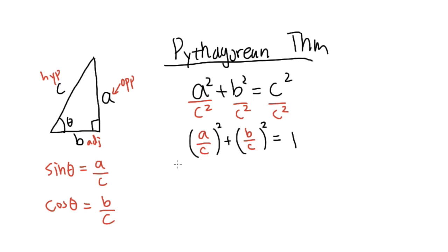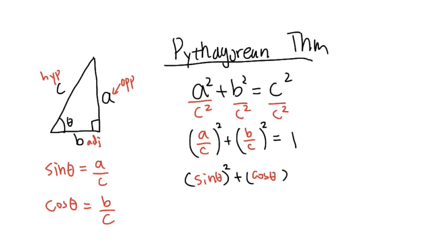Now, a over c as we talked about is just sine theta, so (a/c) squared becomes (sine theta) squared. And b over c — that's why we did this earlier — b over c is cosine theta, so (b/c) squared becomes (cosine theta) squared.